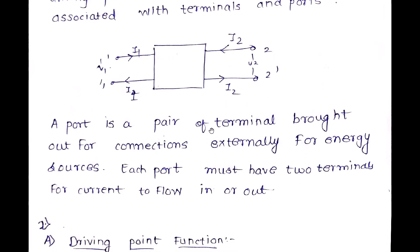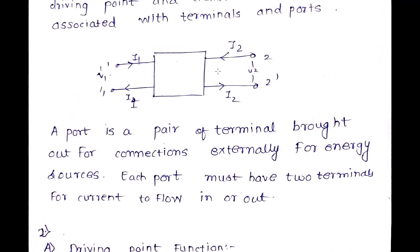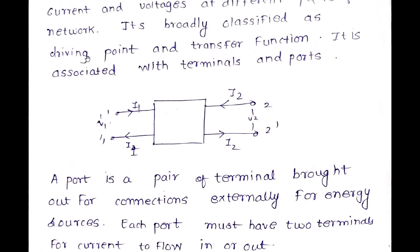A port is a pair of terminals brought out for external connections for energy sources. Each port must have two terminals for current to flow in and flow out. The network box can have two ports: V1, I1 at port 1 and V2, I2 at port 2. We will now discuss the driving point function and the transfer function in detail.